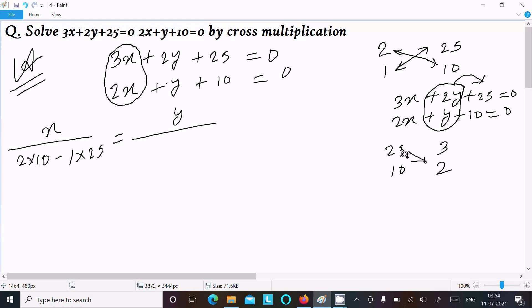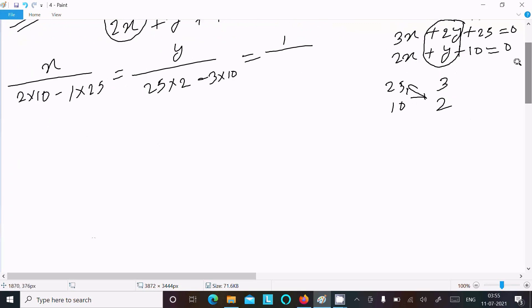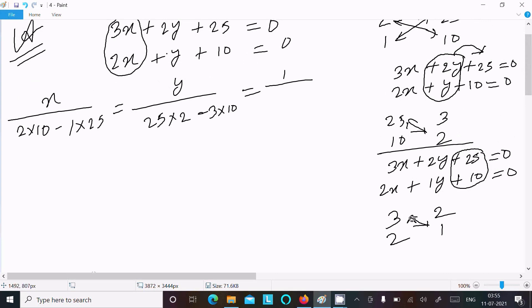So here 25 into 2 minus 3 into 10. Next, the constant part. For the constant, hide the constant part and write the coefficient: 3, 2, 2, 1. Do the cross multiplication, so here 3 into 1 and 2 into 2, so 3 into 1 minus 2 into 2.